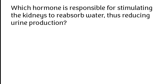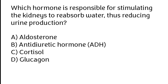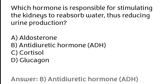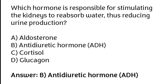Which hormone is responsible for stimulating the kidneys to reabsorb water, thus reducing urine production? Aldosterone, anti-diuretic hormone (ADH), cortisol, glucagon. The correct answer is option B: anti-diuretic hormone (ADH) is responsible for stimulating the kidneys to reabsorb water, thus reducing urine production.